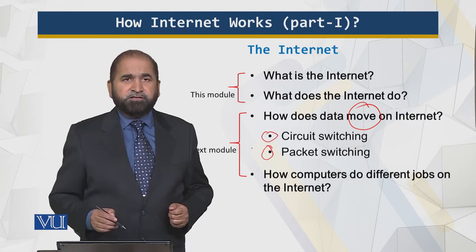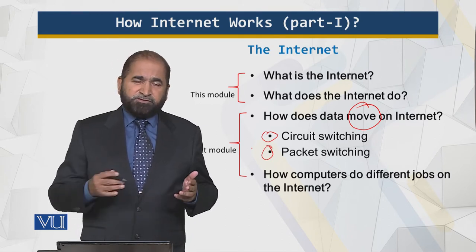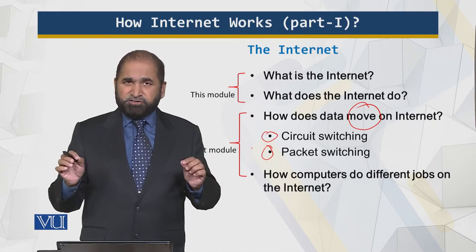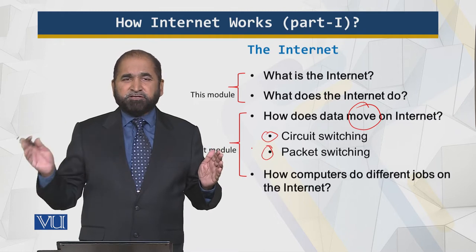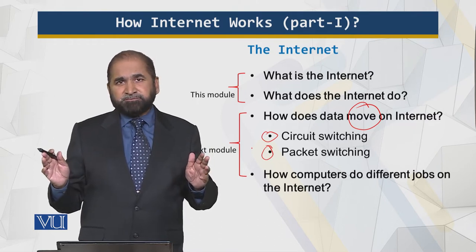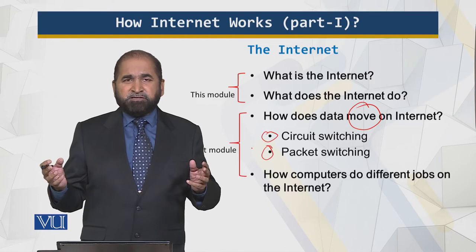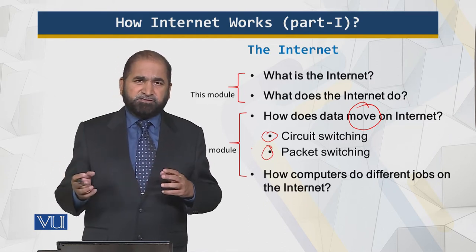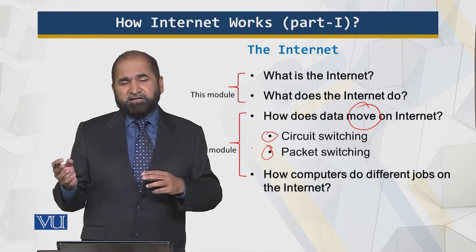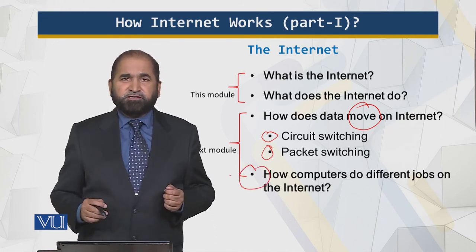There are two methods of moving data: circuit switching and packet switching. In circuit switching, a dedicated path is set between two points, exclusively used by computer A and computer B. In packet switching, the data is divided into packets which can take different routes over the internet, may be lost during transit, and are then reassembled at the destination.